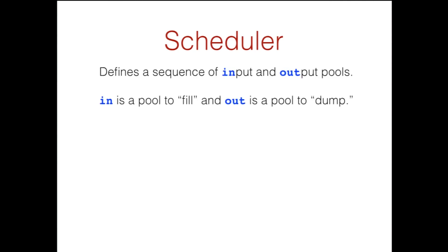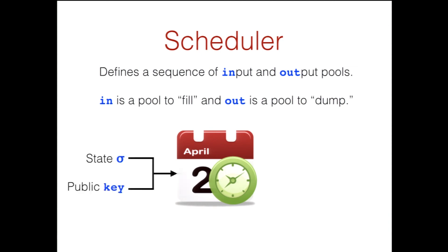So what is a scheduler? It's something that defines an input sequence, an output sequence. The inputs are pools to fill, and the outputs are pools to empty. We model it formally just as a function, so it's stateful. It takes a state and a key, and it outputs a new state, an input pool, and an output pool. And of course, we can just run this many times, and that will give us our sequence of inputs and outputs.